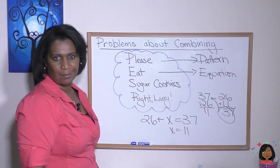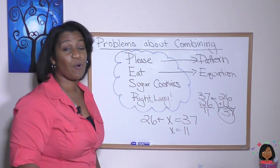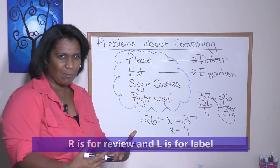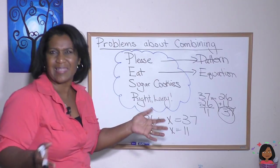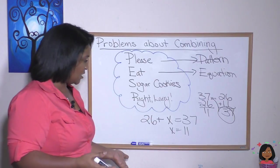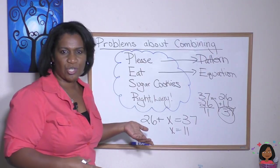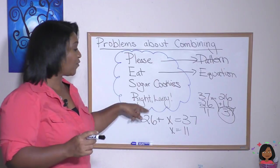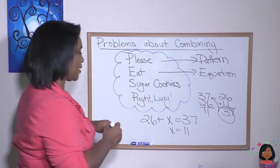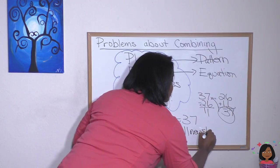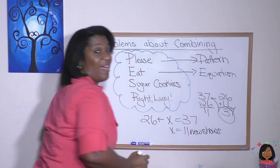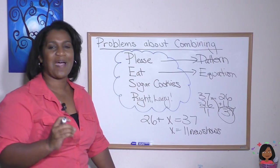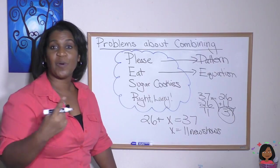And the last one, right Larry, stands for review and label. So we go back and we review our problem to make sure the answer we came up with, it sounds okay. Like it makes sense. And let's see. Does it make sense that we taped 11 new shows during the day on Tuesday? That sounds about right. And now we label. The L is for label. 11 new shows is our label. And that's it. If you can use please eat sugar cookies right Larry, you will know how to attack the word problems. Let me give you another one.